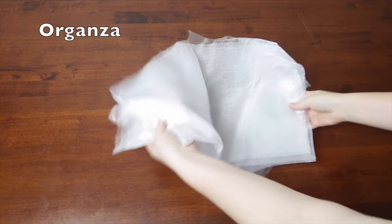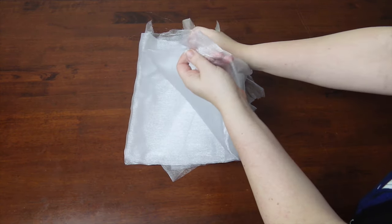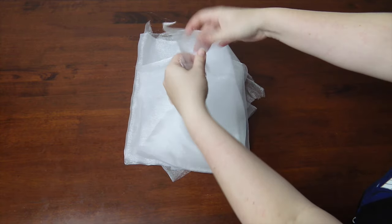First up, we have organza. If you're working with a sheer fabric, like chiffon, and need a little bit of support in places like a collar or a cuff, you can add a layer of organza to it.